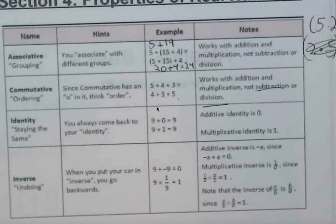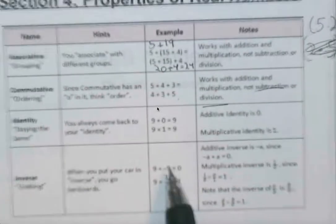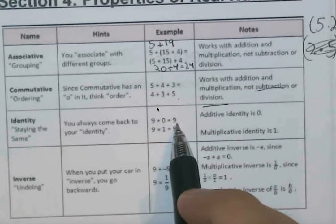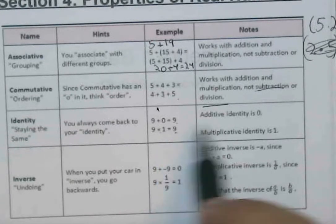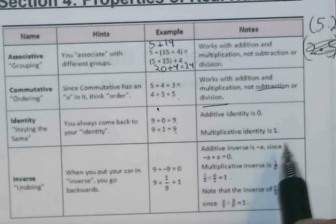With the identity, if we are adding, let's say, 0, we end up at our identity. But if we're multiplying by 1, that also gives us our identity. The additive identity is 0. Multiplicative identity is 1.